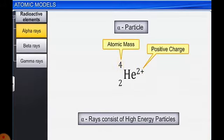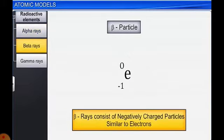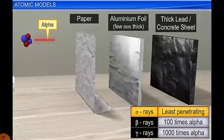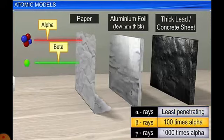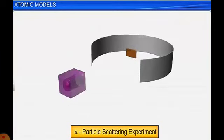Alpha particles are denoted by helium with atomic number 2 and mass 4, carrying a 2+ positive charge — they are high-energy positively charged particles. Beta rays consist of negative charge particles similar to electrons, with no mass but a negative charge. Gamma rays are high-energy neutral radiations with no particles. Gamma rays have more penetrating power: beta rays can penetrate 100 times that of alpha rays, and gamma rays can penetrate 1000 times that of alpha rays.